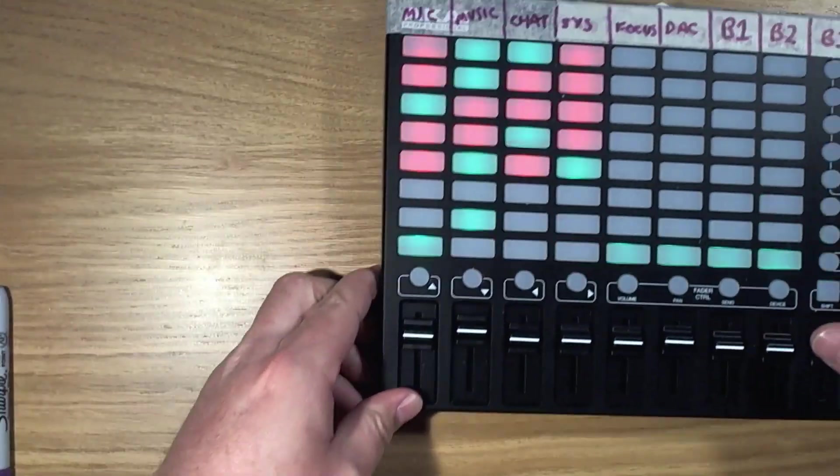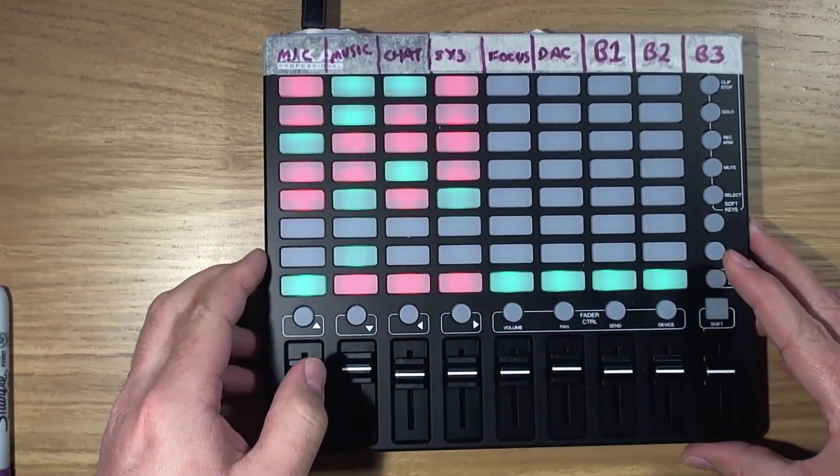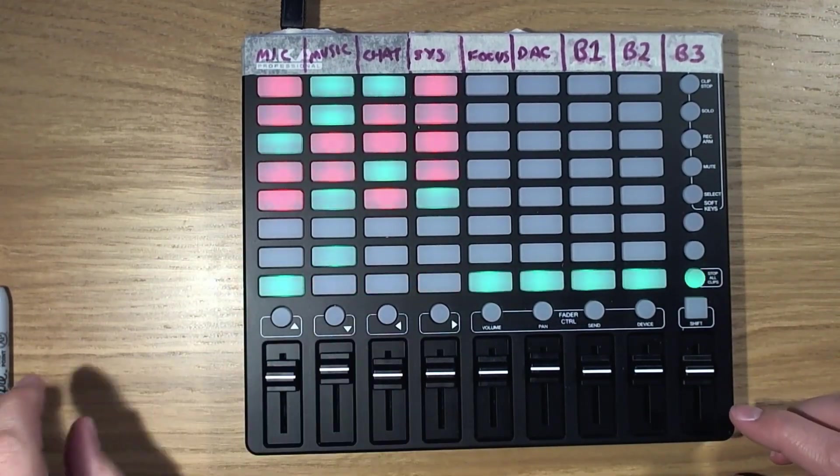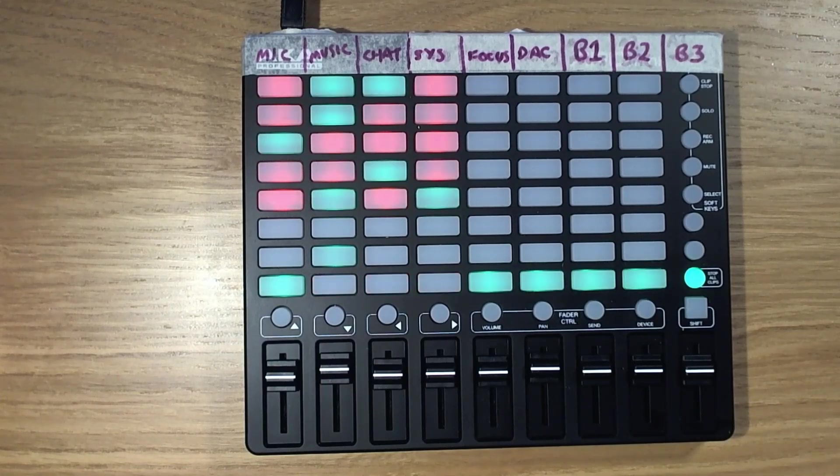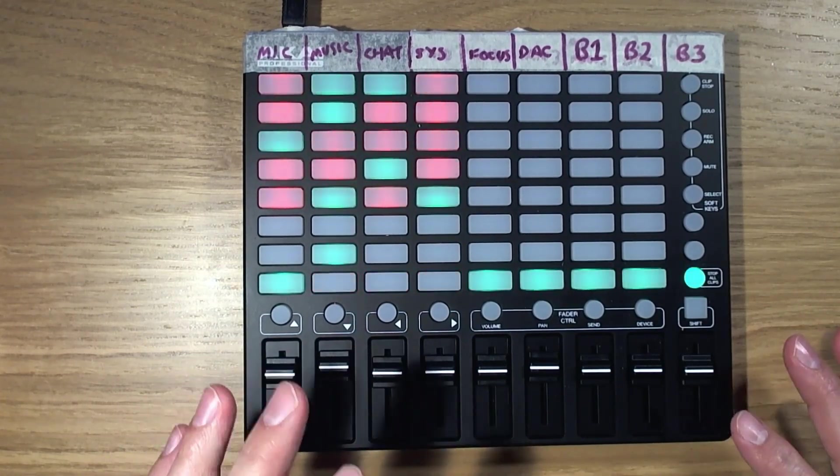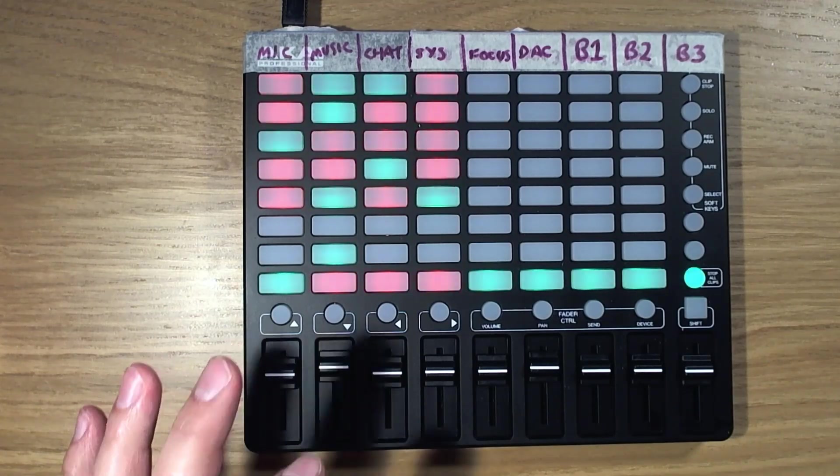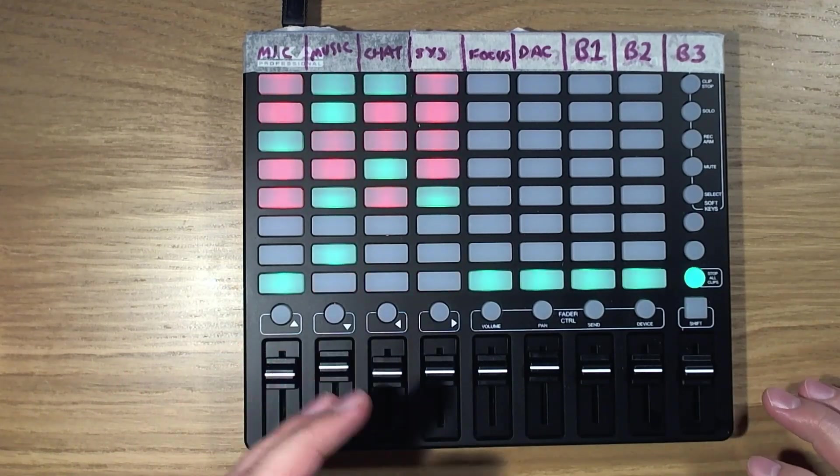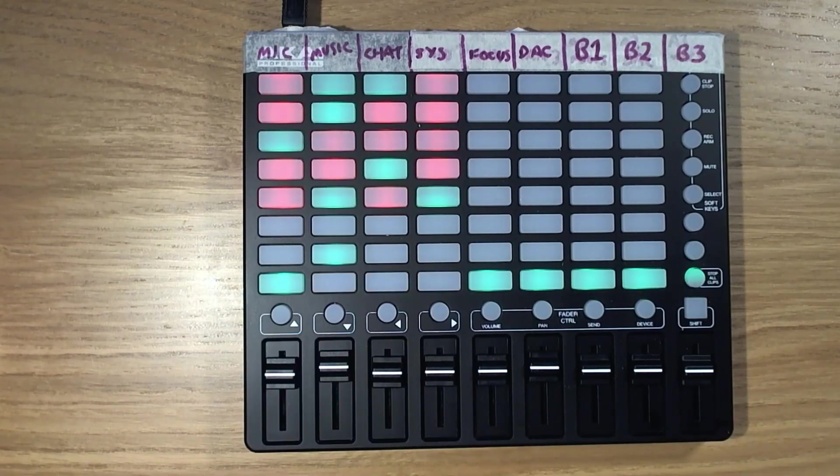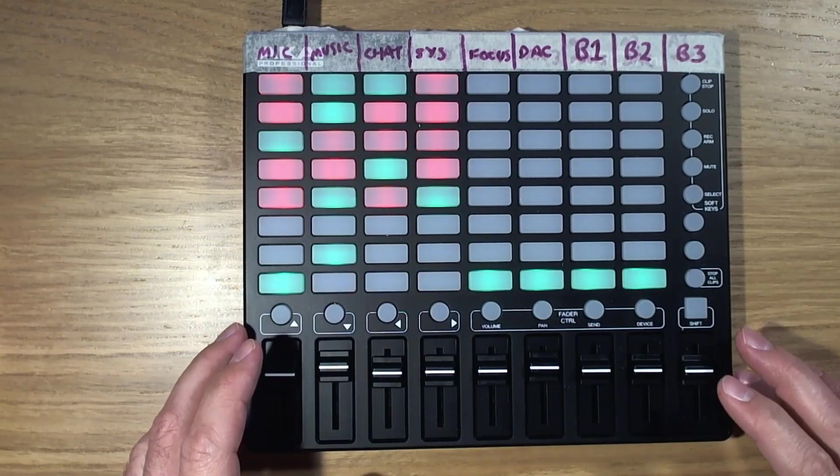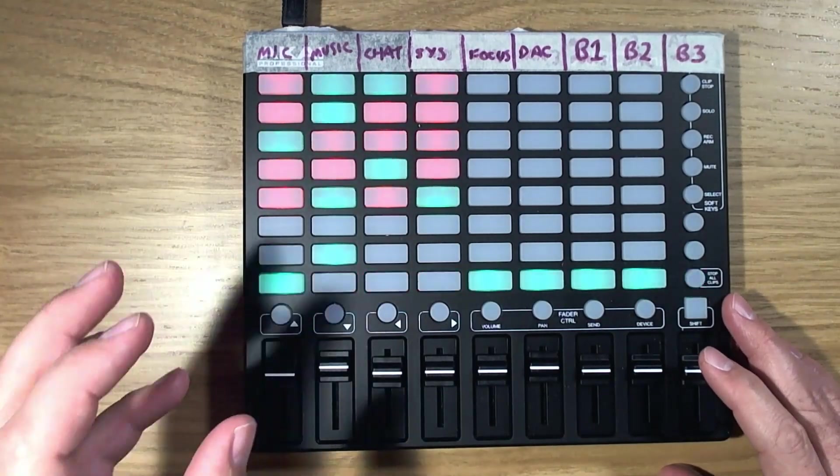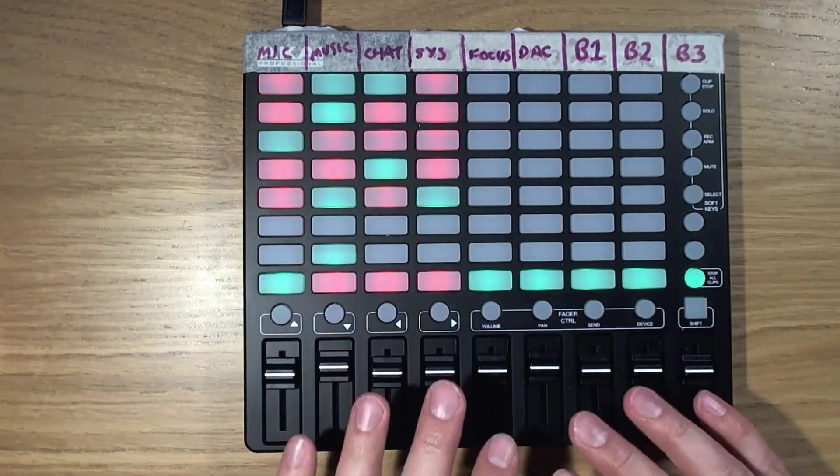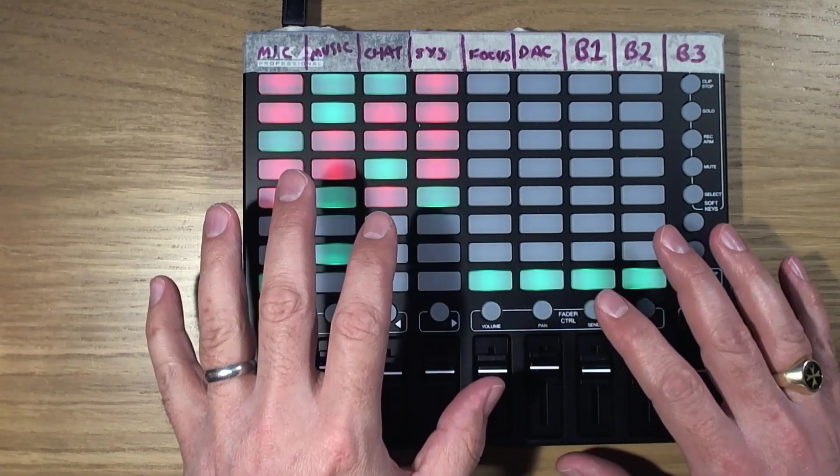So this is the APC Mini, the Akai APC Mini. It's a MIDI controller device. It's quite a cool device. It's not particularly expensive, but it's probably something that you'd want to consider buying rather than just going out and just hitting buy now on Amazon or something like that. And what you can do in VoiceMeter is map all the virtual inputs and outputs to physical faders and buttons.